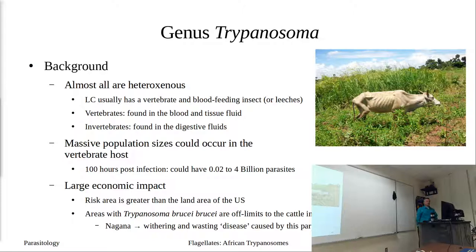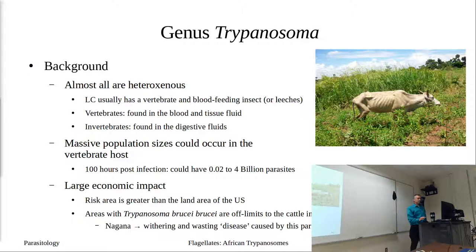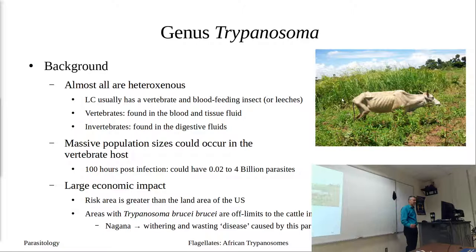There are trypanosome areas off-limits to raising cattle because Trypanosoma brucei brucei causes a wasting disease in cattle in Africa called nagana. You can see with the wasting disease you're not developing that cow for a lot of meat. The risk area for trypanosomes is larger than the land area of the United States — so a pretty significant risk area.